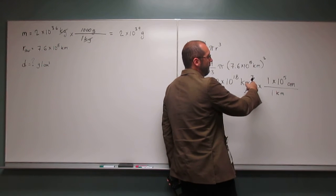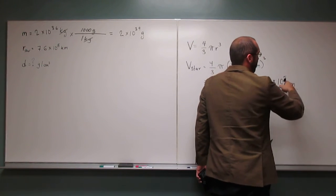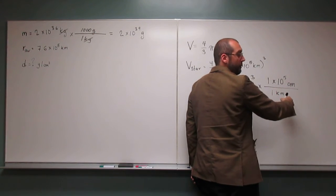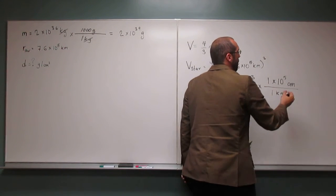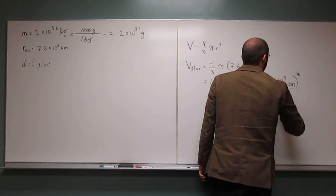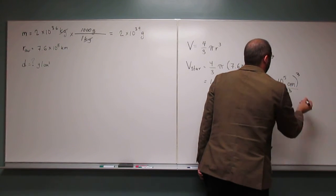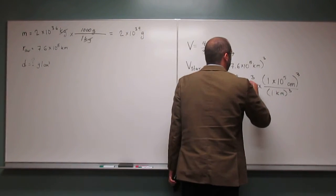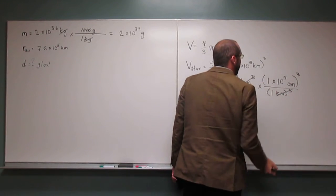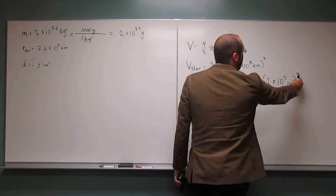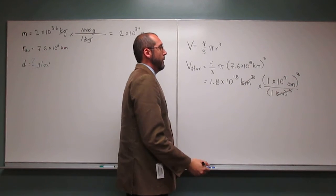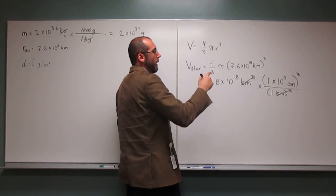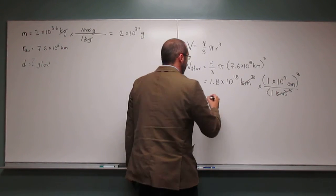But we have cubed here, so we can multiply times 1 times 10 to the 5th centimeters per kilometer three times, or we could just do like this. So hopefully you see kilometers cubed gets canceled, but we've got to cube 1 times 10 to the 5th centimeters. When we do that, of course, it's 5 plus 5 plus 5, which is 15.